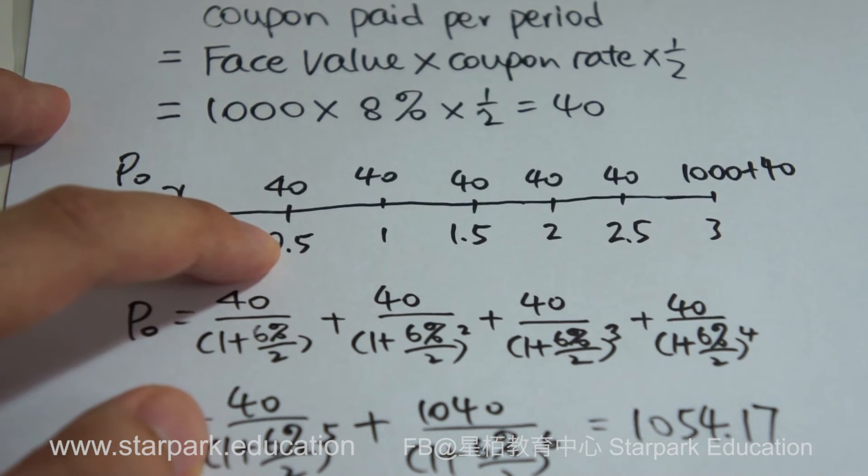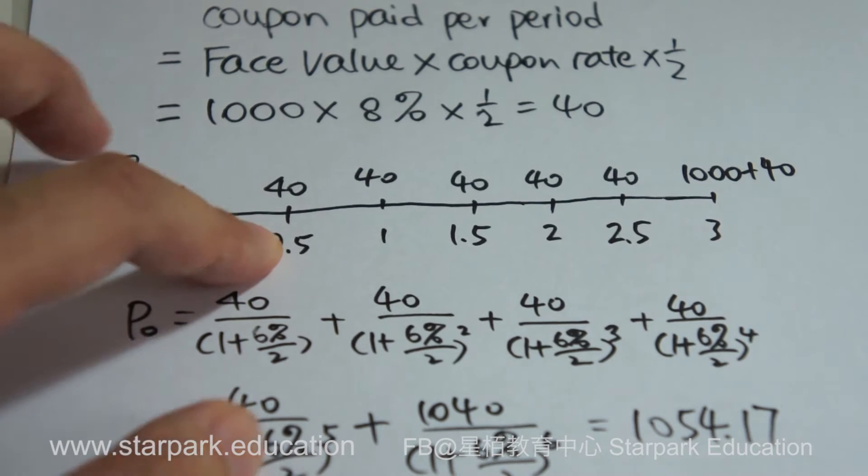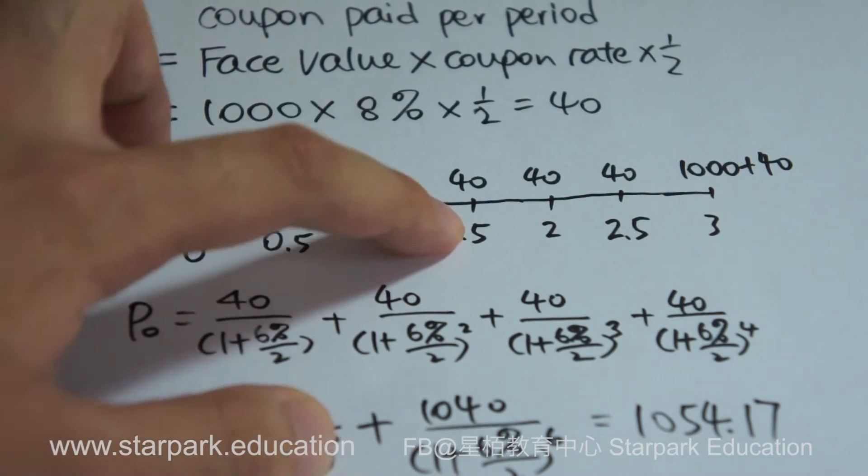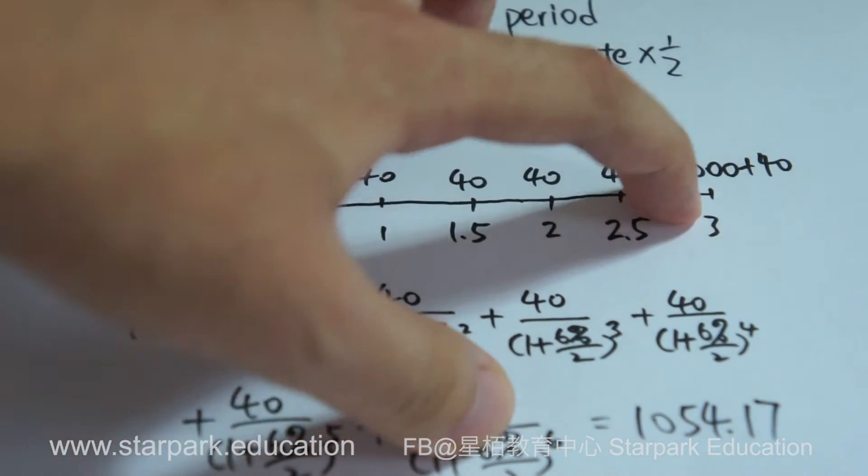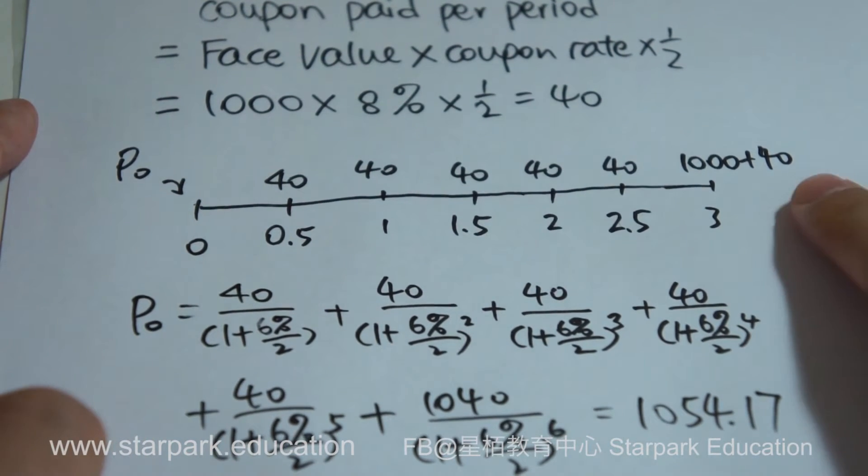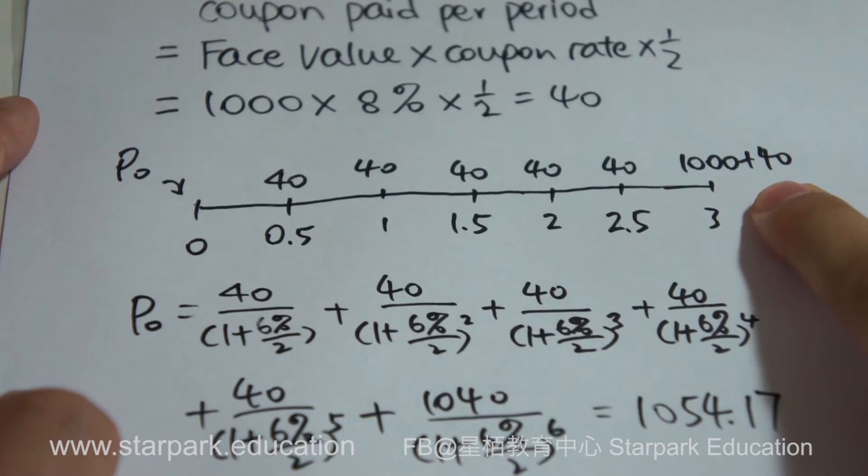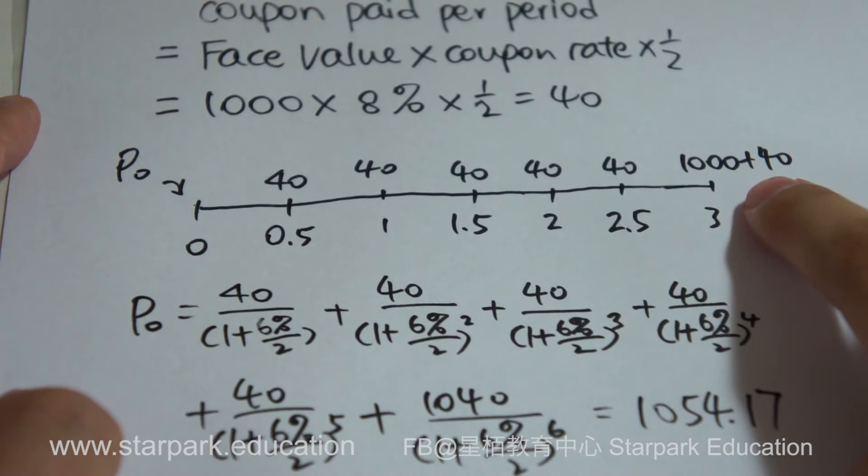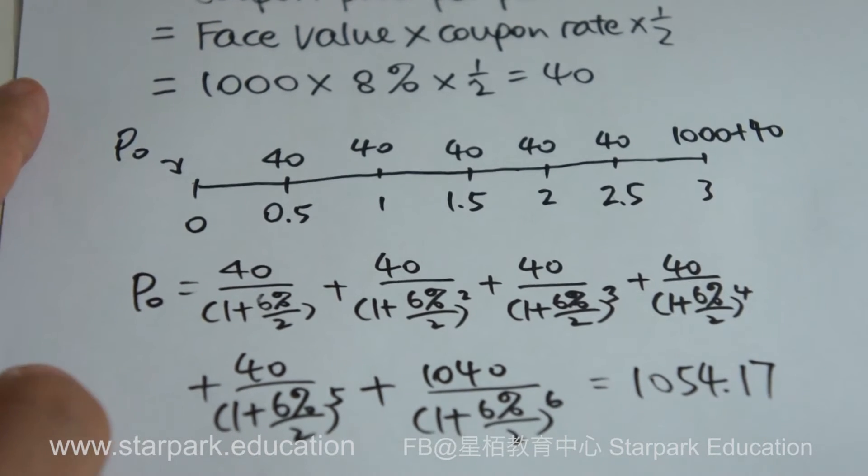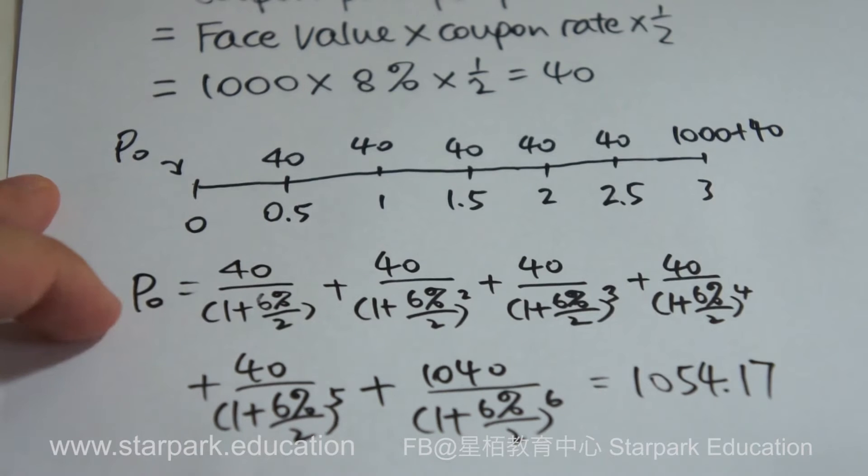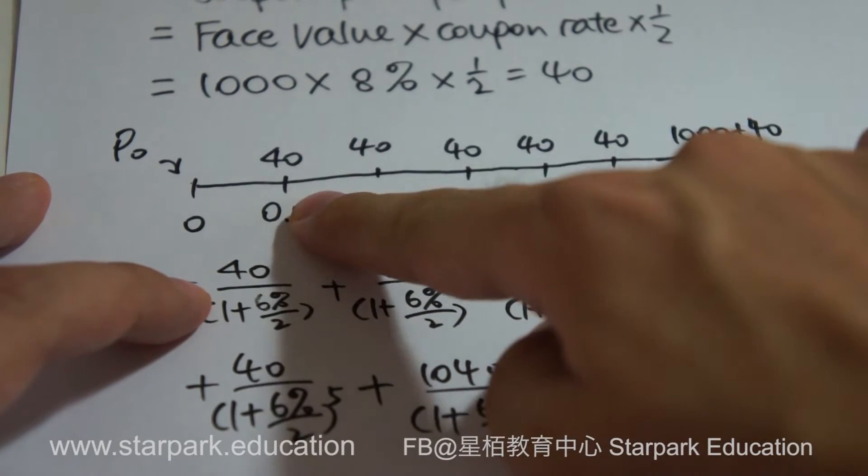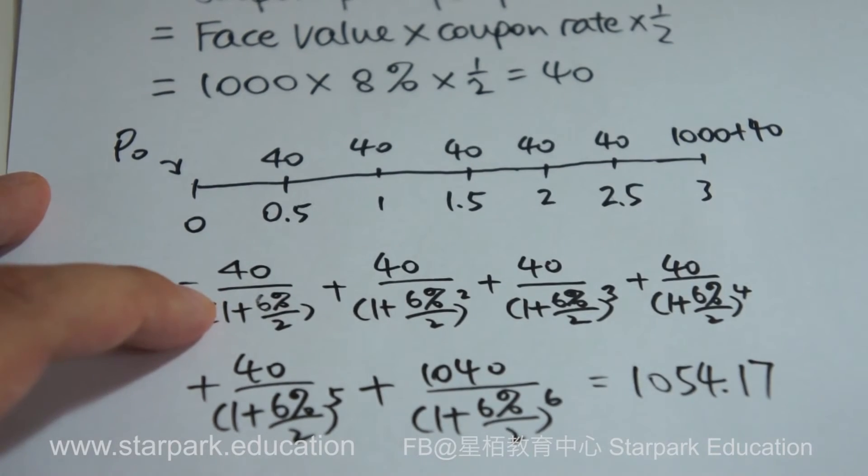Starting from here, half a year later, at 0.5, we will receive $40. And then for the second time, $40, which we will receive one year later, and so on. Until at the end of year 3, which means the 1st of January 2017, I received $40 plus an additional face value of $1,000. So in total, I received 1,040 at the end of year 3.